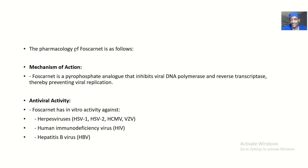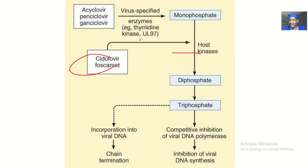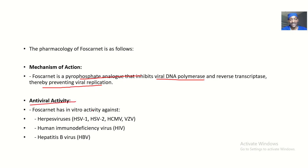The pharmacology of Foscanet is as follows. Mechanism of action: Foscanet is a pyrophosphate analog and it inhibits the viral DNA polymerase and reverse transcriptase enzymes, thereby preventing viral replication. It will basically stop proliferation of the virus by inhibiting the conversion of monophosphate to diphosphate in the viral cycle.